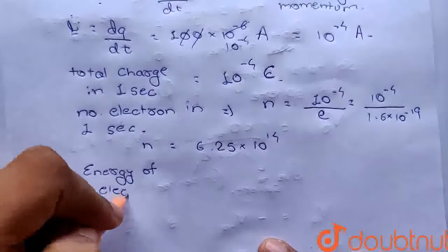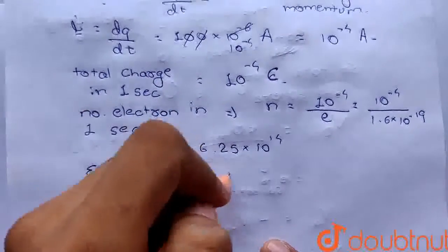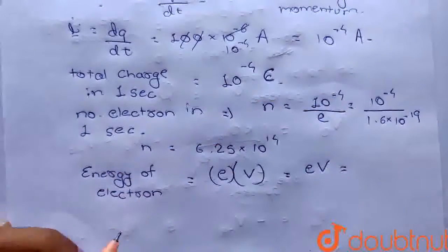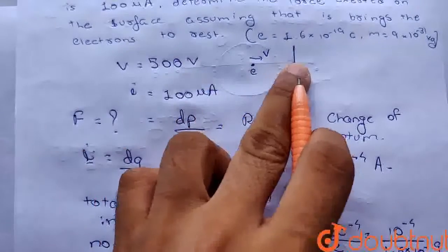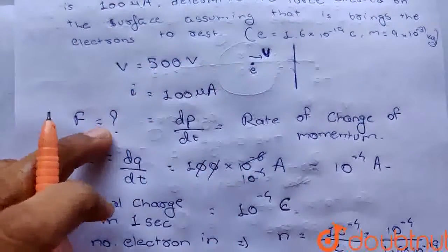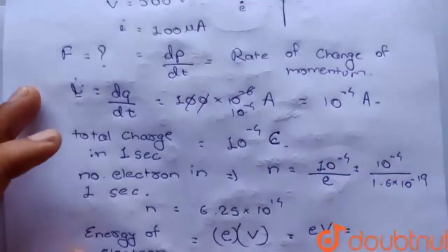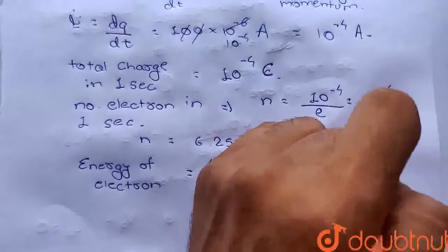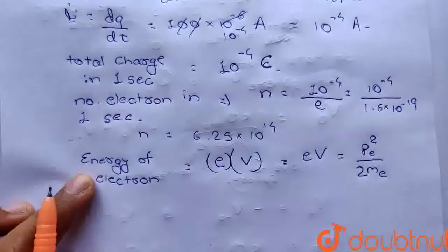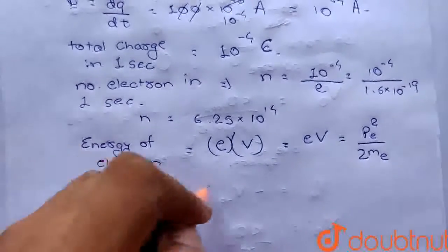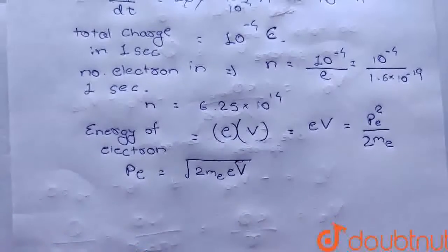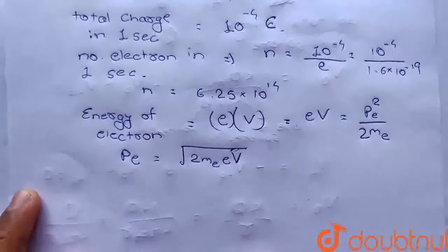Energy of electron — जब तक वो surface पहुंचेगा तब तक उसके पास energy होगी: electron का charge into potential difference, यानी e into V। यह kinetic energy की form में होगी। Kinetic energy को लिख सकते हैं p²e / (2me), जहाँ pe momentum of one electron है। तो pe = √(2me · e · V), जहाँ V voltage है — यह momentum of electron है जब वो surface से टकराने वाला होगा।